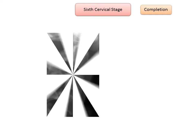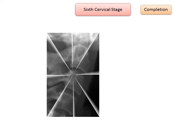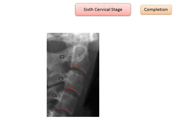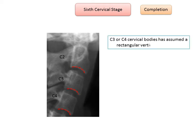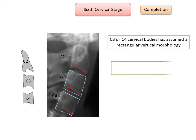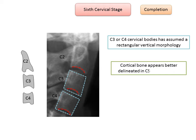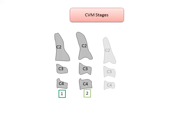The sixth cervical stage, CS6, is the stage of completion and the most difficult stage to determine. Deep concavities are observed on C2, C3, and C4. At least one of the C3 and C4 bodies has assumed a rectangular vertical morphology. In addition, the cortical bone appears better delineated in CS6 than in CS5. Pubertal growth is completed by this stage.